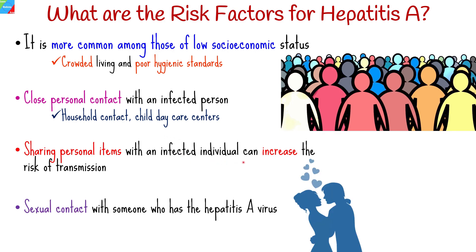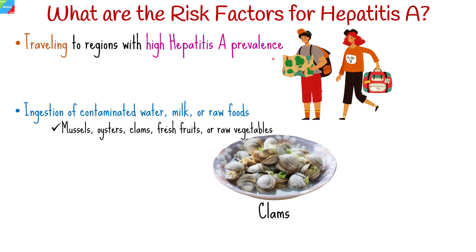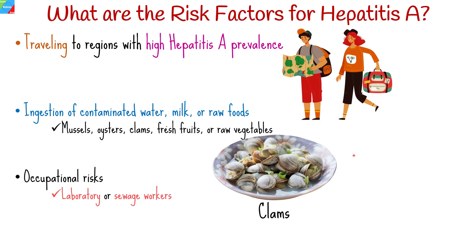Sexual contact with someone who has the hepatitis A virus is a risk factor. Traveling to regions with high hepatitis A prevalence also increases risk, particularly in areas with poor sanitation and hygiene practices. It may be acquired by the ingestion of contaminated water, milk, or foods — particularly raw or undercooked shellfish such as mussels, oysters, and clams, as well as fresh fruits or raw vegetables. Occupational risks exist, for example in laboratory or sewage workers.